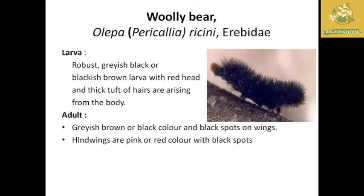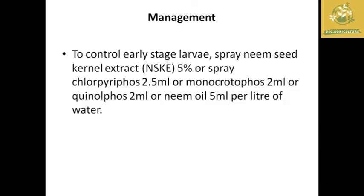Next is Ulipar. The larva is robust, greyish-black or blackish-brown in color, with red hairs and ticks, and hairs on the body. The adult has black spots on the wings with pink and reddish colors. For management: spray 5% neem seed kernel extract, which is effective for control. Chemical sprays like chlorpyrifos, monocrotophos, and quinalphos can also be used.